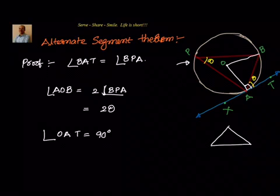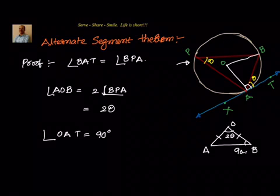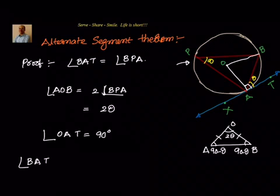Now consider triangle OAB. The angle at center is 2 theta. It's an isosceles triangle because OA equals OB, so the two base angles will each be 90 minus theta, satisfying the angle sum property of 180 degrees.